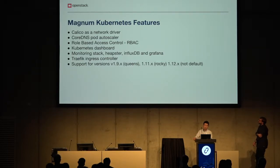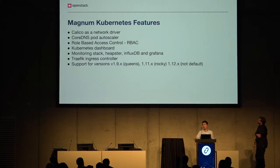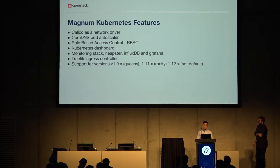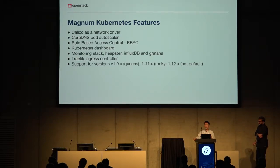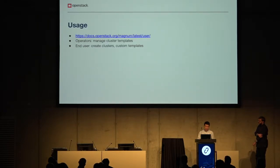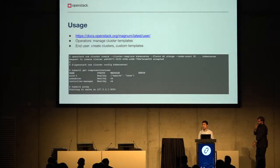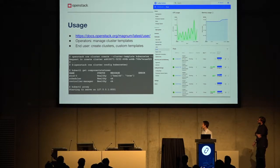CERN also adds support for a traffic ingress controller. Users can also use the Octavia ingress controller, but it hasn't been fully integrated in Magnum yet. For Kubernetes versions: Queens supports v1.9, Rocky supports v1.11.x. We also support v1.12 but it's not the default — we'll likely put it into the Stein release. Users can use the command line to create clusters and access them with kubectl, and the dashboard is enabled by default.